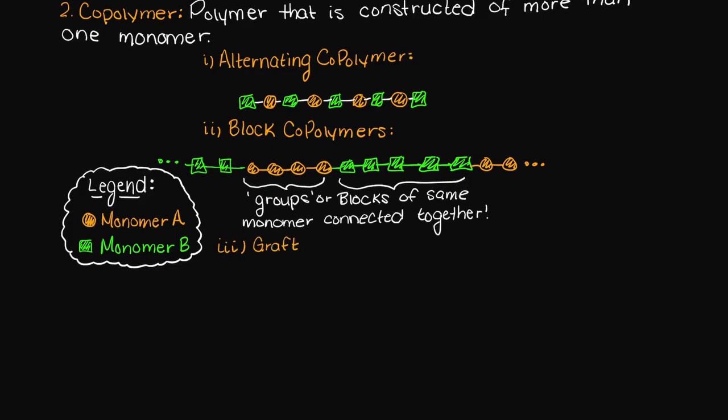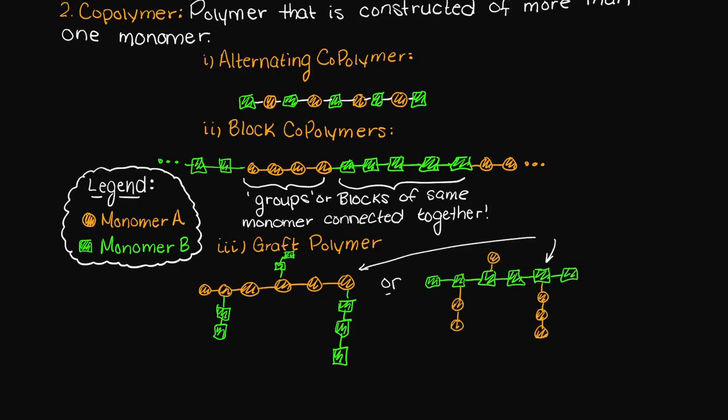Thirdly, we could have what is called a graft polymer, which is essentially a homopolymer base with branches of another monomer based homopolymer grafted on. We can take grafted to be another way of saying attached or connected.